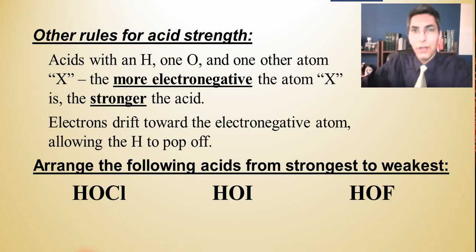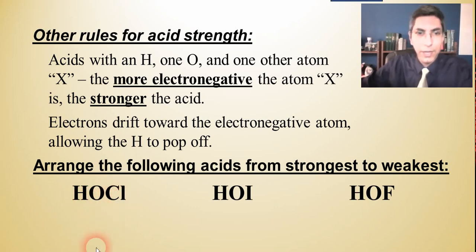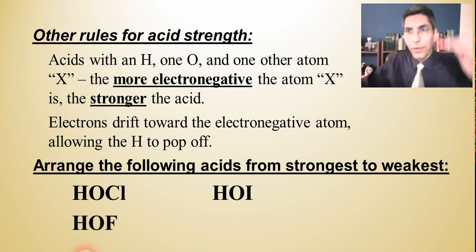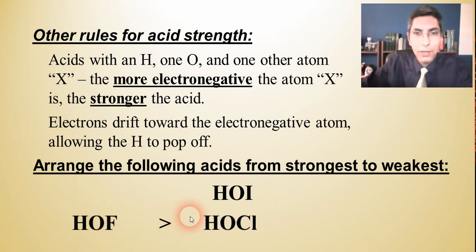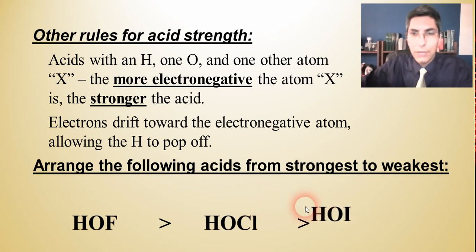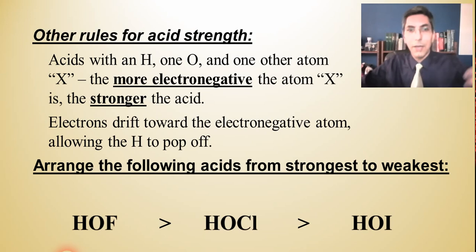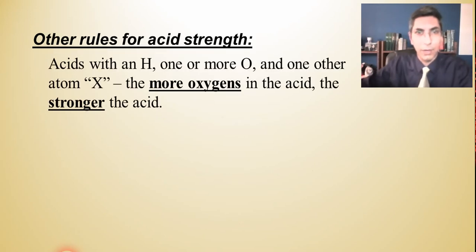For example, arrange HOF, HOCl, and HOI from strongest to weakest acid. The most electronegative tail is fluorine, so HOF is the strongest acid. Chlorine is next on the halogen scale, so HOCl is in the middle. Iodine has the lowest electronegativity of the three halogens, so HOI is the weakest acid.